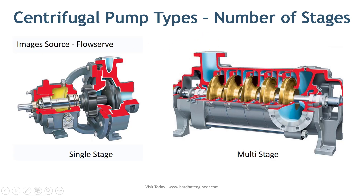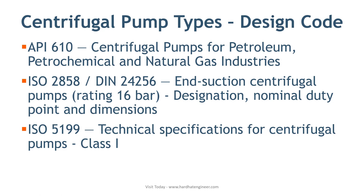Next is classification by design code. The two most commonly used codes are API-610, which is the most widely used in oil and gas, petrochemical, and similar process industries — it has its own pump classification such as overhung or OH type, vertical suspended or VS type, and BB type which is between bearing. The second is ISO 5199 or ISO 2858, also known as DIN 24256, which is now merged with ISO 2858 and used for all types of pump design.